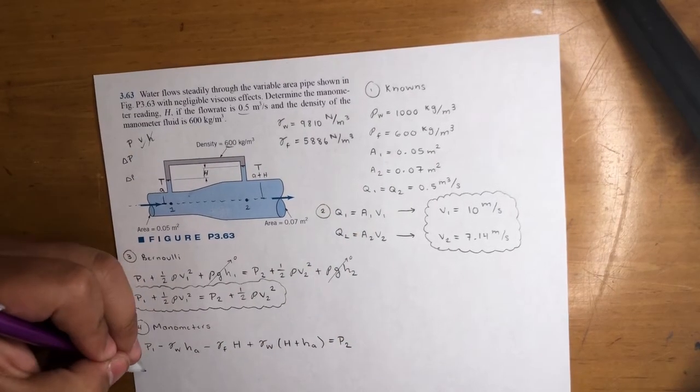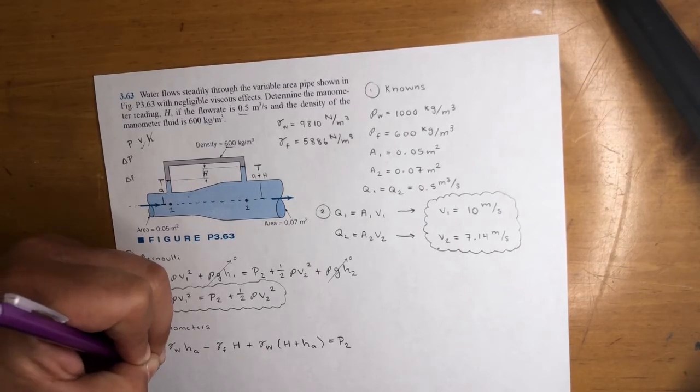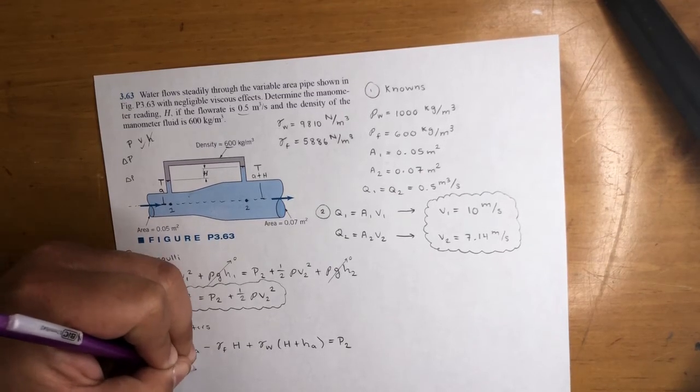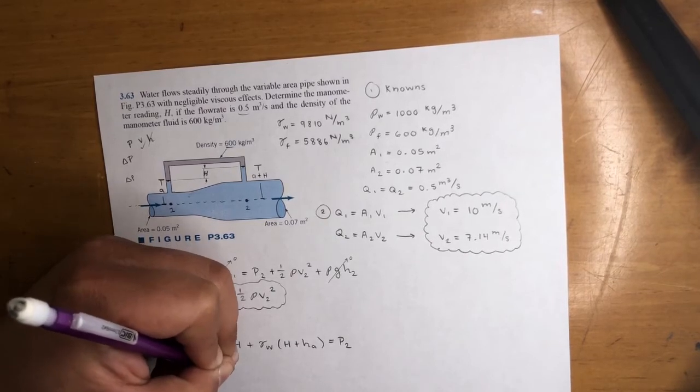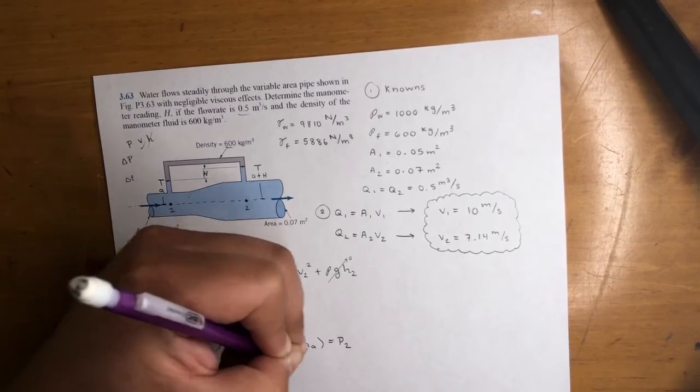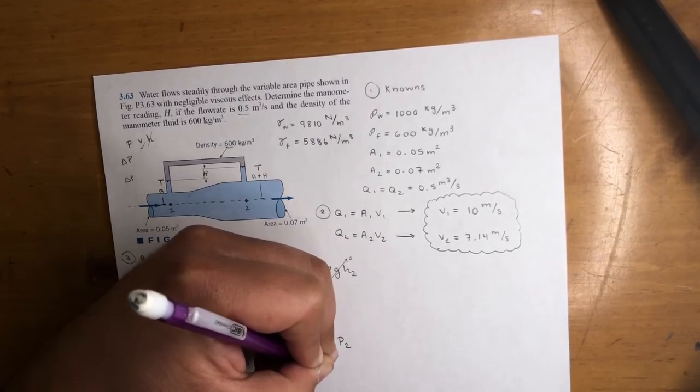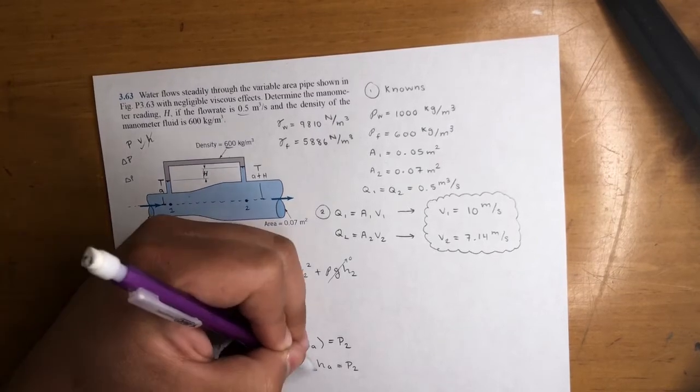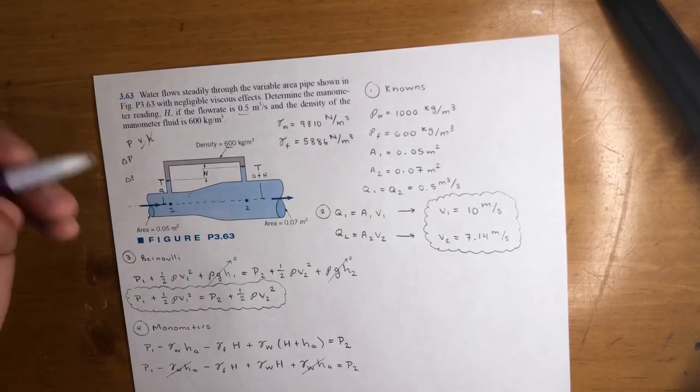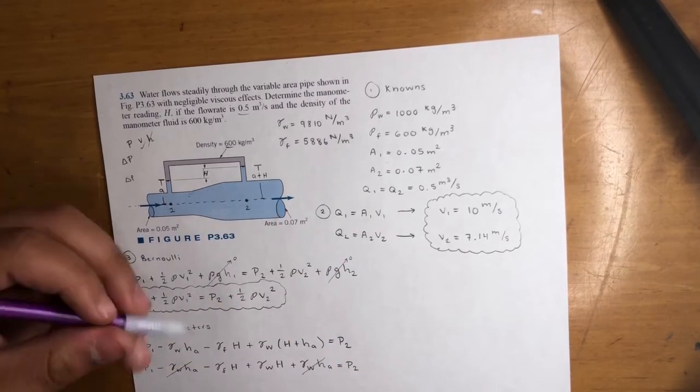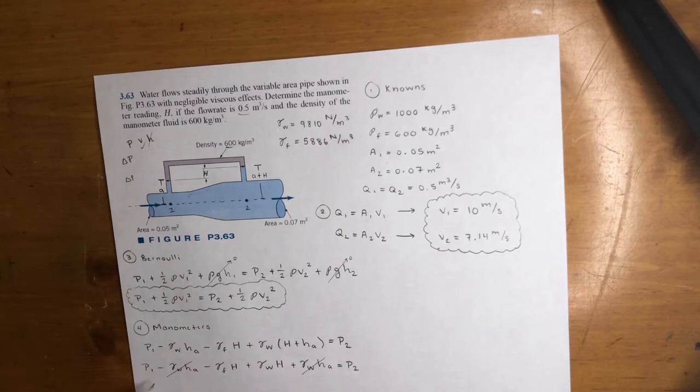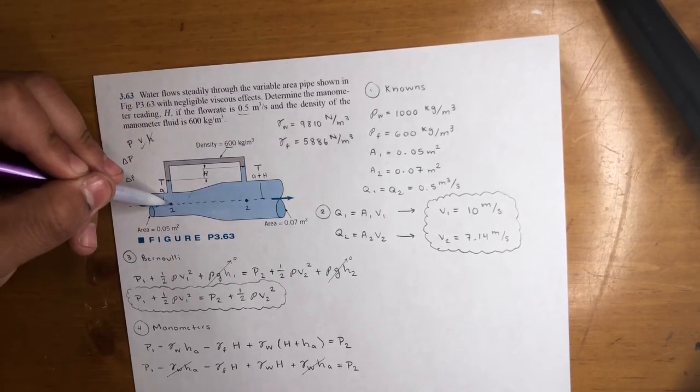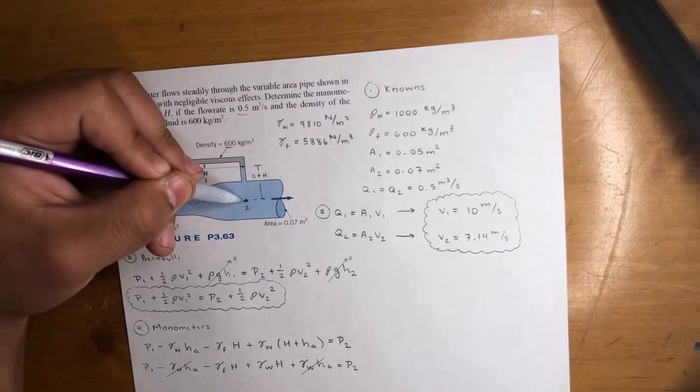Alright. So we kind of just work our way through. P1 minus gamma of water - well, you know what, let's simplify first. Gamma of water HA minus gamma of fluid times H plus gamma of water times H plus gamma of water times HA equals P2. Okay. Here we see this term cancels out with this one. So that's cool.